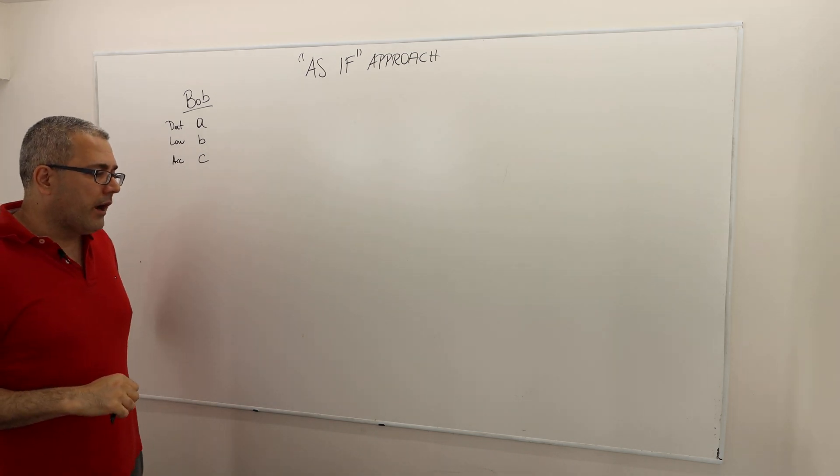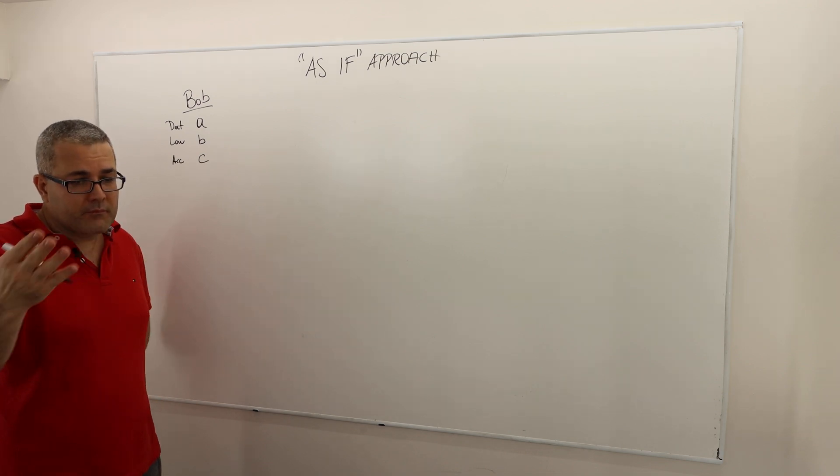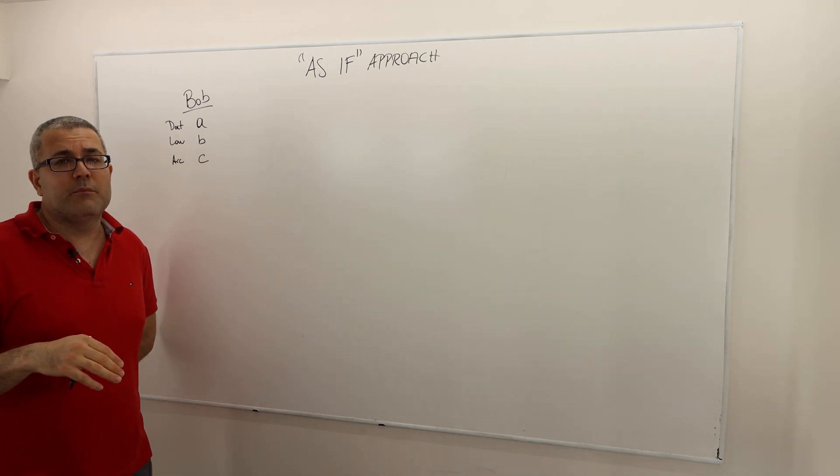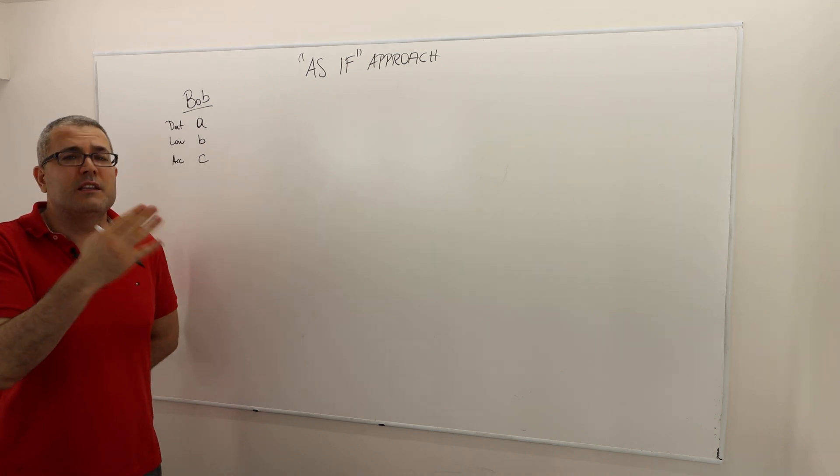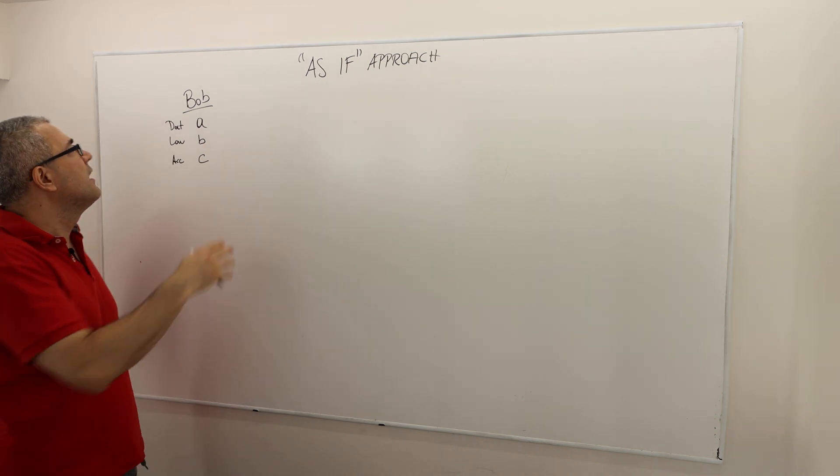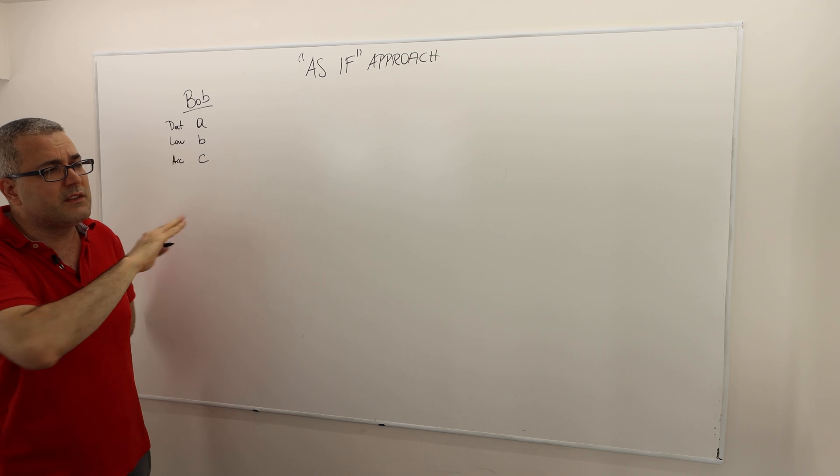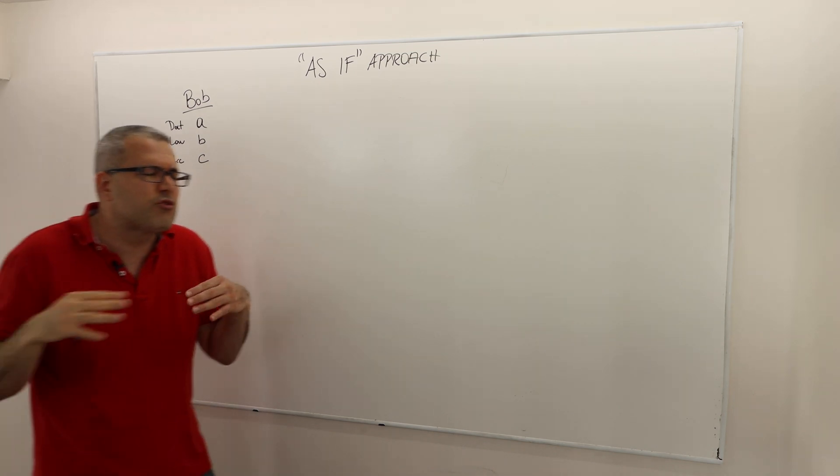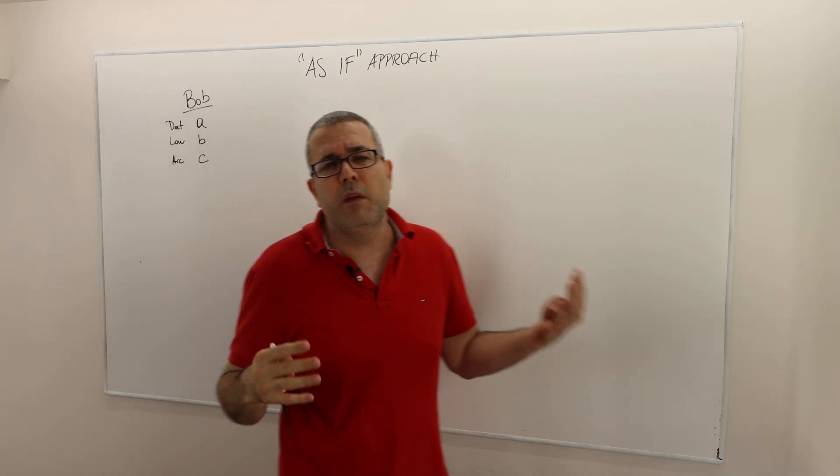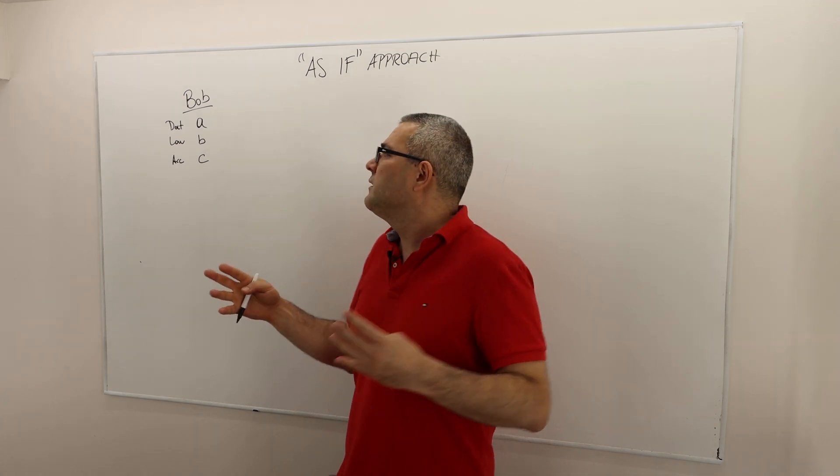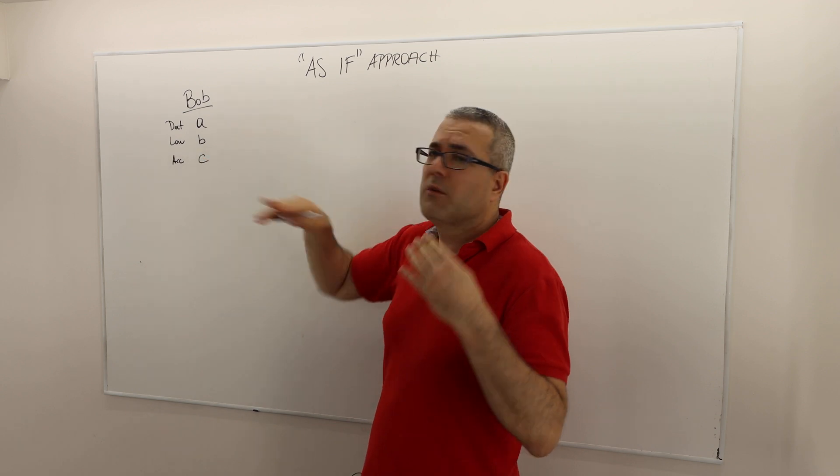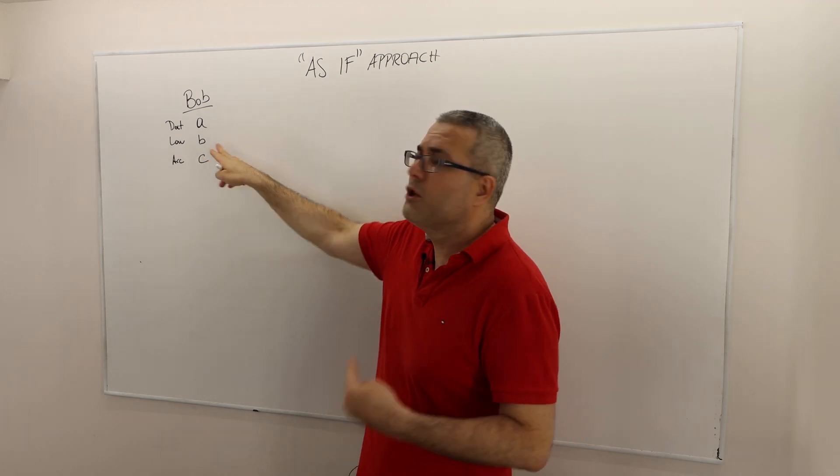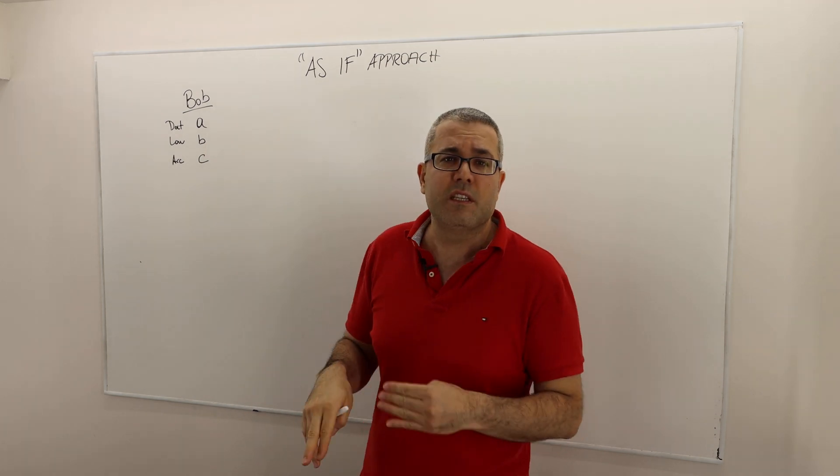And Bob indeed thinks that being a doctor, let's call it a, is definitely better for him than being a lawyer and then being an accountant. All right. So accountant. So this is a doctor, and this is a lawyer and this is an accountant. All right. So this is what he thinks, let's suppose.